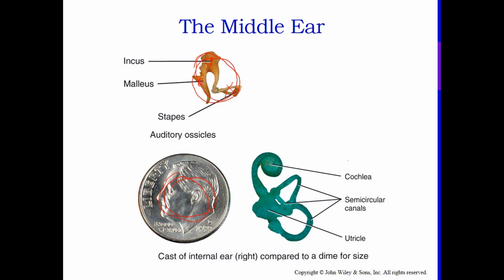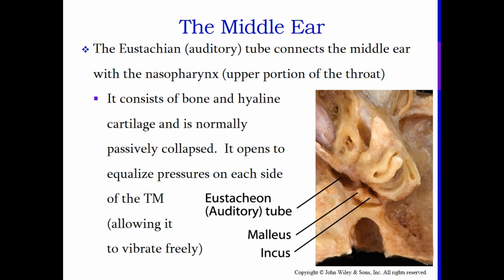Those three bones would fit on a dime — they are very, very small. The green-colored bones in your inner ear are also not very big. You have your cochlea, which is your organ of hearing, and your semicircular canals, which give you your balance and equilibrium.